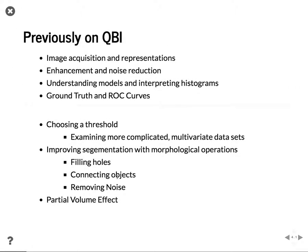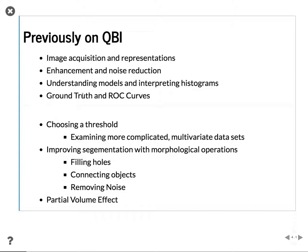So again, what we looked at before: first lectures covered image acquisition and representation, then enhancement and noise reduction — ideas we'll get back to today. Understanding models and interpreting histograms, and ground truth and ROC curves. Last week we specifically covered choosing a threshold, so when you look at a histogram, how can you pick a threshold for this value, then improving the segmentation, and things to be concerned about like the partial volume effect.